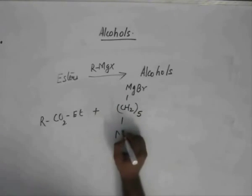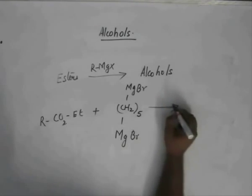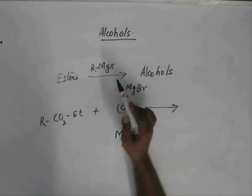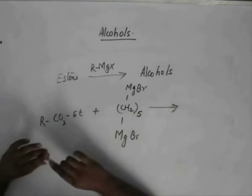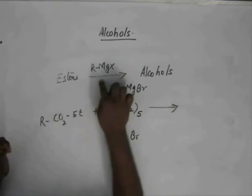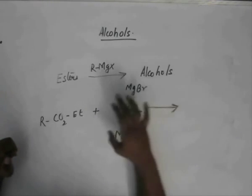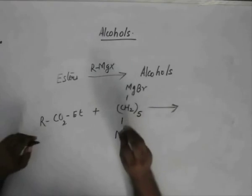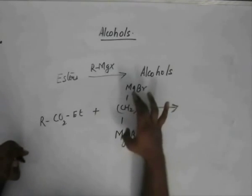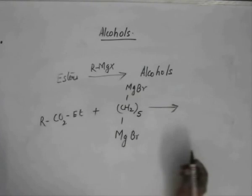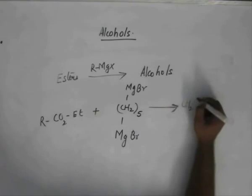As we saw that this Grignard reagent attacked ester twice. So rather than attacking the same ester with two molecules of R-MgX, we are using here a peculiar Grignard reagent which has two nucleophilic centers. This is what happens. We are left with a cyclic compound.